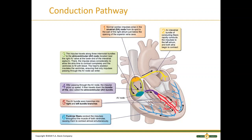The conduction pathway starts at the SA node, traveling down conducting fibers to both atria, which begin contracting. The impulse then travels to the AV node, down to the bundle of His (also called the AV bundle), then branches into the right and left bundle branches, and finally to the Purkinje fibers, which conduct the impulse throughout the muscle of both ventricles, causing them to contract simultaneously.